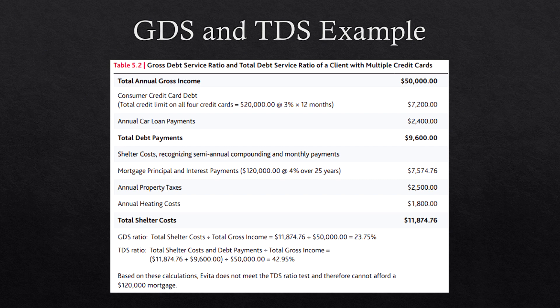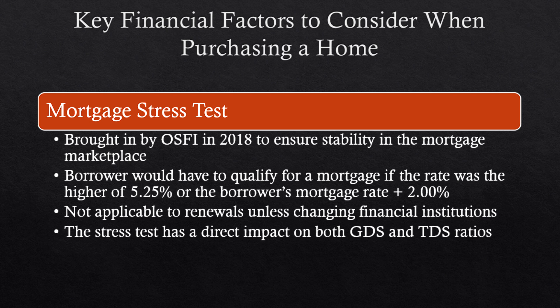The mortgage stress test was introduced by OSFI in 2018 to ensure stability in the mortgage marketplace. The borrower must qualify at a rate higher than 5.25% or their mortgage rate plus 2%, whichever is greater. The stress test is typically not applicable to renewals unless you are switching financial institutions — it is usually only done when first applying or switching lenders. It has a direct impact on both the GDS and TDS ratios.